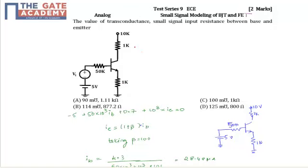Hello, the given question is from Test Series 9, Subject Analog, Chapter Small Signal Modeling of BJT and FET. We have to find out the value of transconductance, small signal input resistance between base and emitter, and the given options are shown here.